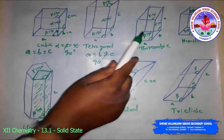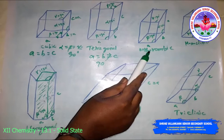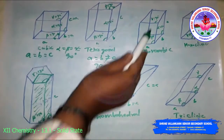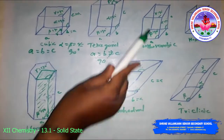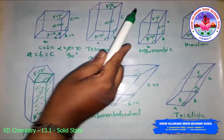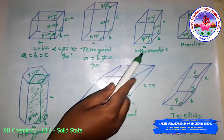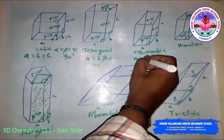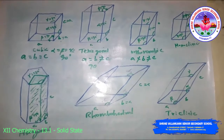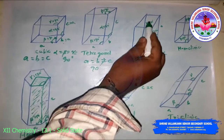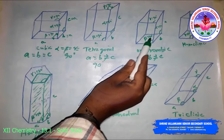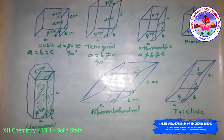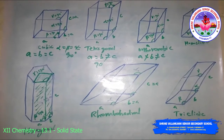The orthorhombic crystal system has four possible variations: primitive, body-centered, face-centered, and end-centered. The edge lengths are all different: A ≠ B ≠ C. All angles are 90°: alpha = beta = gamma = 90°.